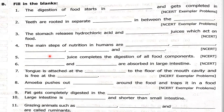Last fill-in-the-blank question: DASH juice completes the digestion of all food components. The answer is intestinal juice. The last part of digestion takes place in the small intestine, so the intestinal juice secreted by the small intestine completes the digestion of all components of food.